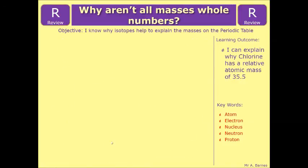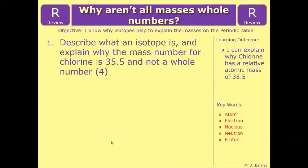Okay, if you're feeling confident, have a go at the review question, which is describe what an isotope is and explain why the mass number for chlorine is 35.5 and not a whole number. Again, that should be relatively straightforward now. That's the end of this video.